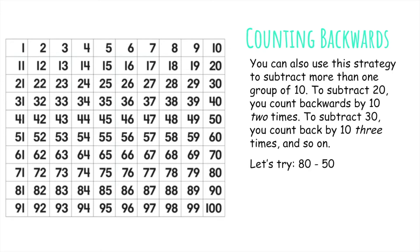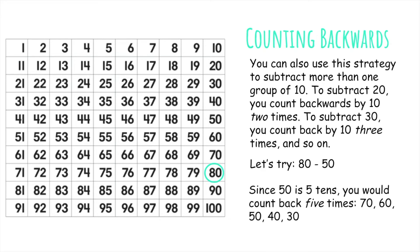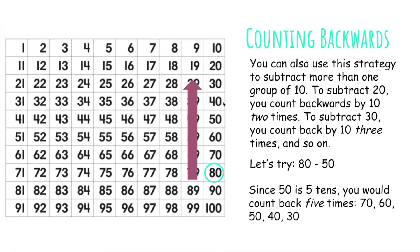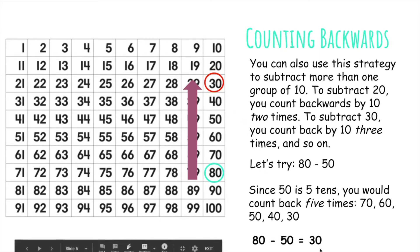So let's try 80 minus 50. I'm going to start at 80. Since 50 is 5 tens, we're going to count back 5 times: 70, 60, 50, 40, 30. We are stopping at 30, and that means 30 is our answer. Our problem is 80 minus 50 equals 30.